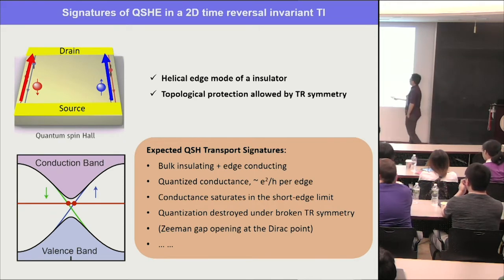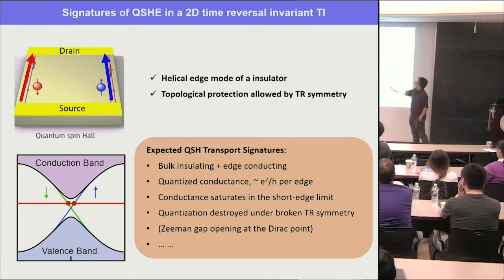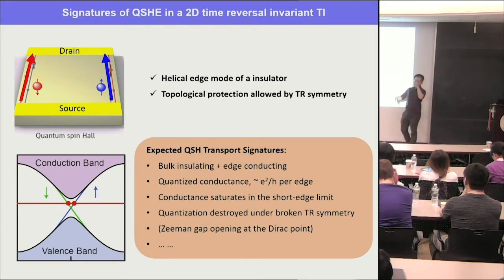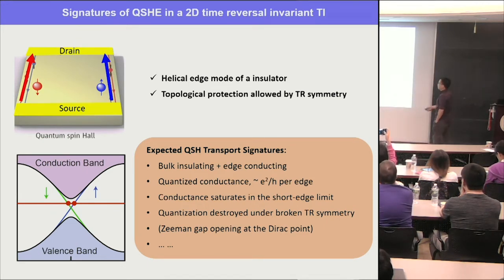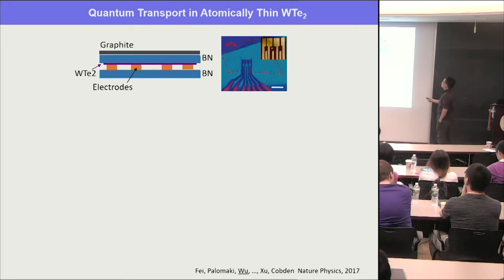You want to demonstrate quantization is not accidental — you want to see it in the ballistic regime. Reduce the channel length to enter the ballistic regime, then demonstrate it is indeed e²/h. For checking time-reversal symmetry, apply a B field. If you apply B field, time-reversal symmetry breaks, so the quantized conductance of the edge mode will be destroyed. If your system has a Dirac point in the edge mode spectrum, applying B field will open a gap at that crossing point.